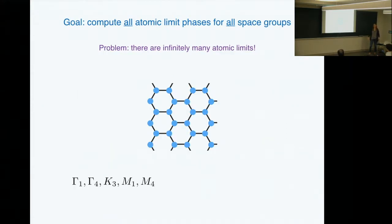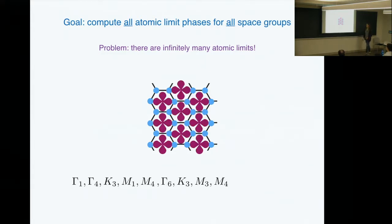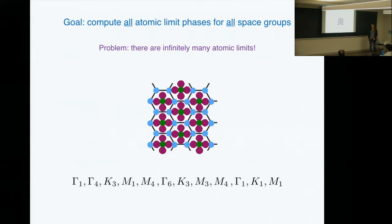That's how we want to define an atomic limit. The next question is how to enumerate all of these atomic limits, because what we're trying to do is make a list of all atomic limit phases so we can identify topological phases as the complement. The problem is that there are infinitely many of these — for example, we have s orbitals on the honeycomb lattice giving one set of labels, but we could also consider px and py orbitals at the center of the honeycomb lattice giving more labels, and so on.